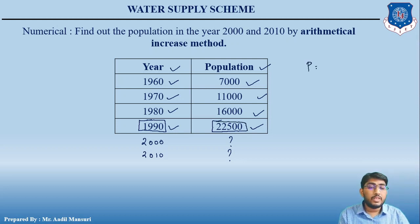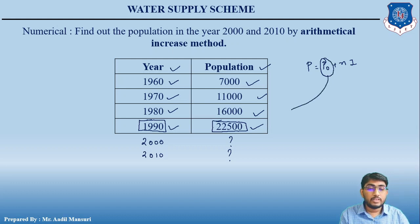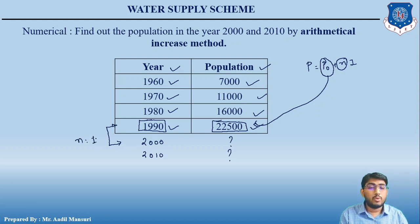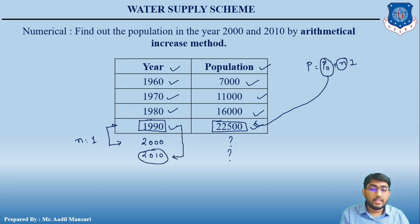Using the formula P = P0 + N × I, the present population P0 is 22,500 (the last known value from 1990). N is the number of decades: from 1990 to 2000, N = 1; and from 1990 to 2010, N = 2. We now need to find the value of I, the average increase.